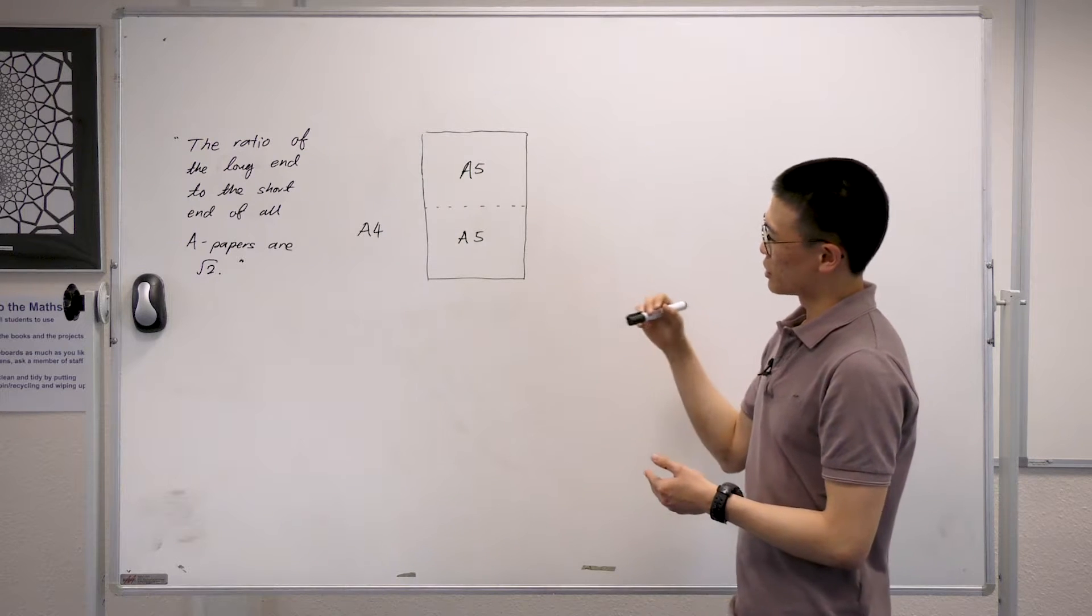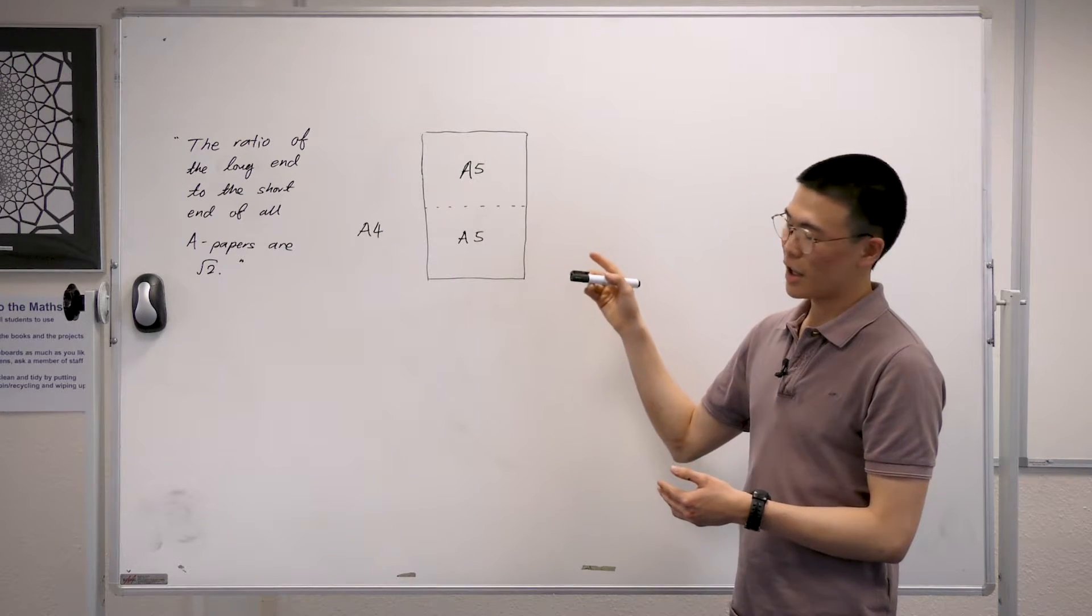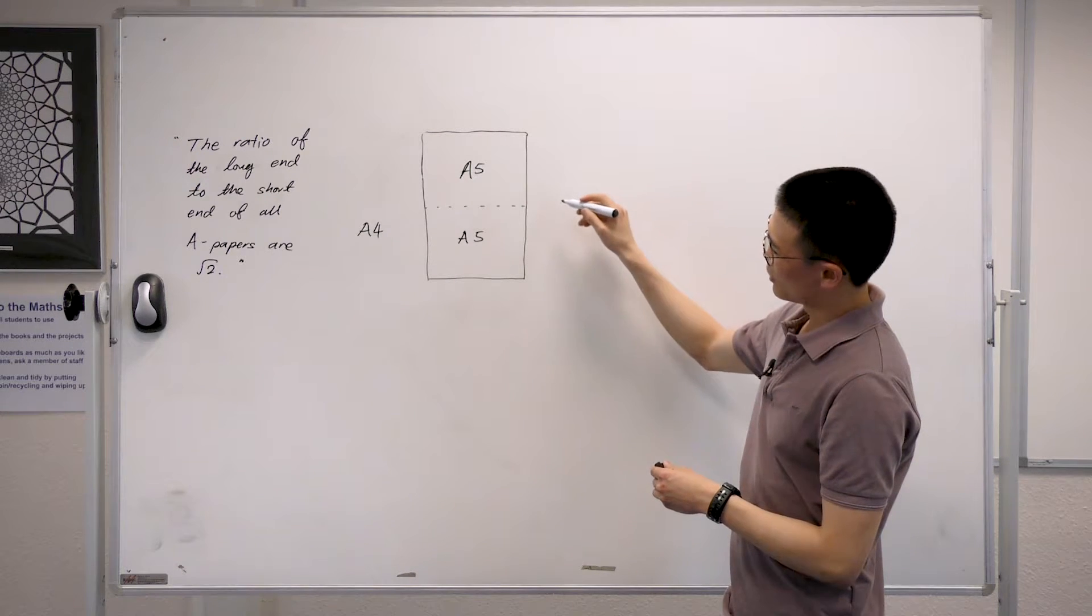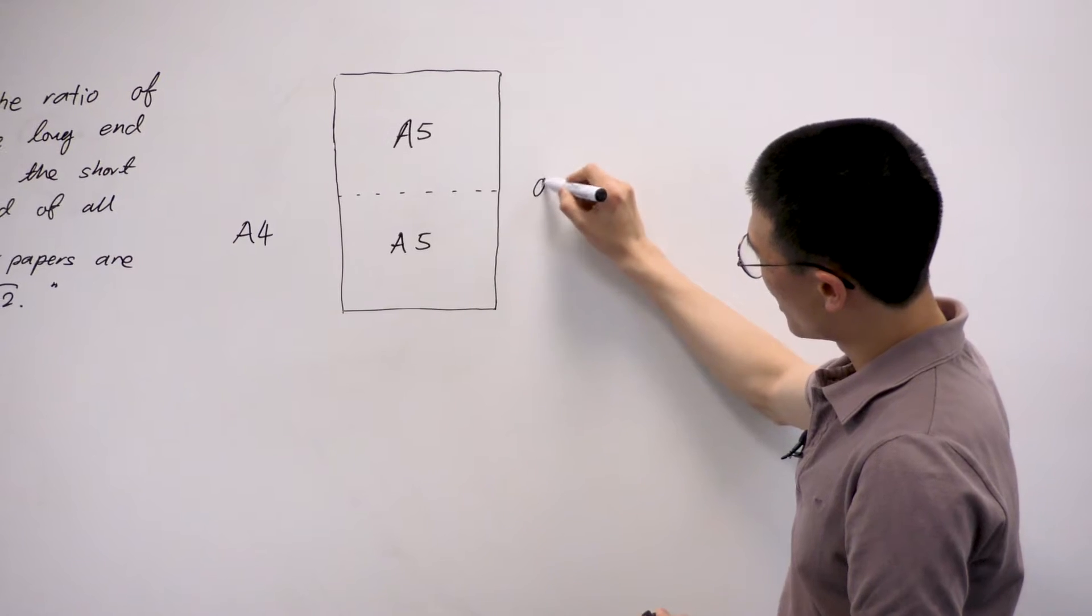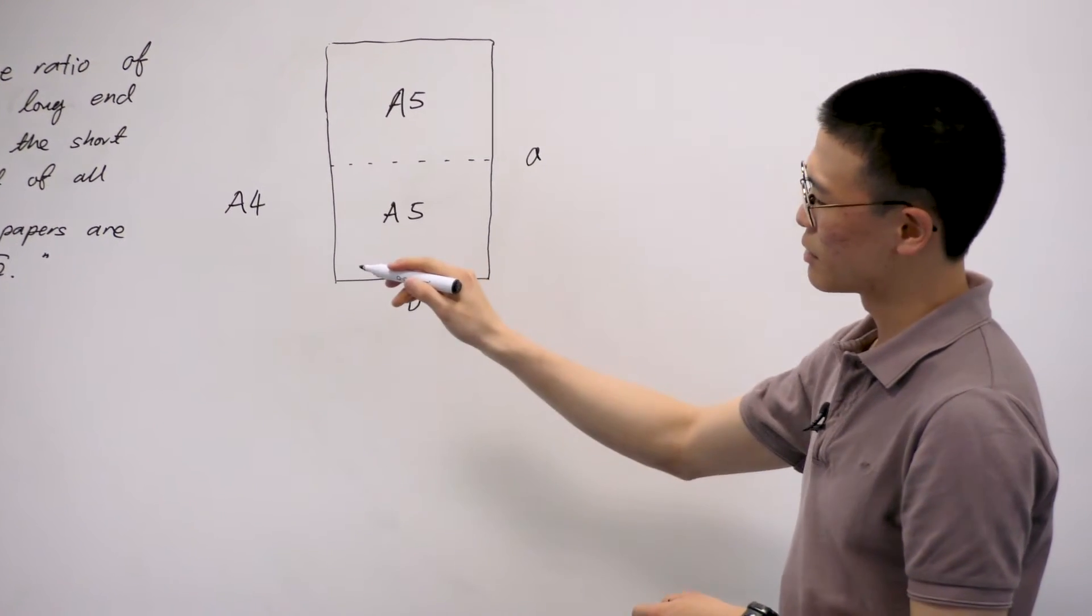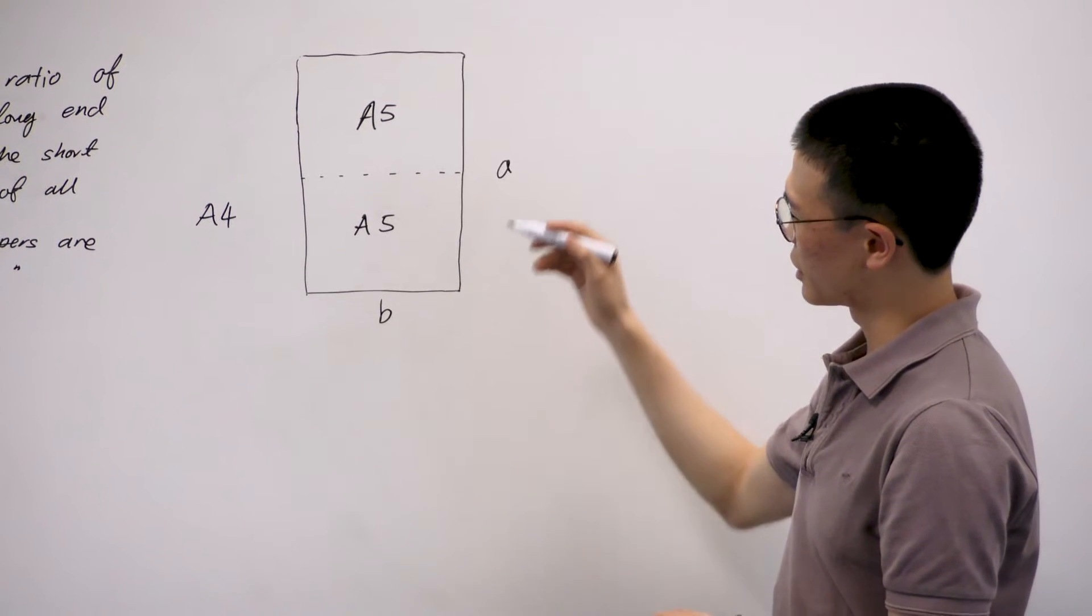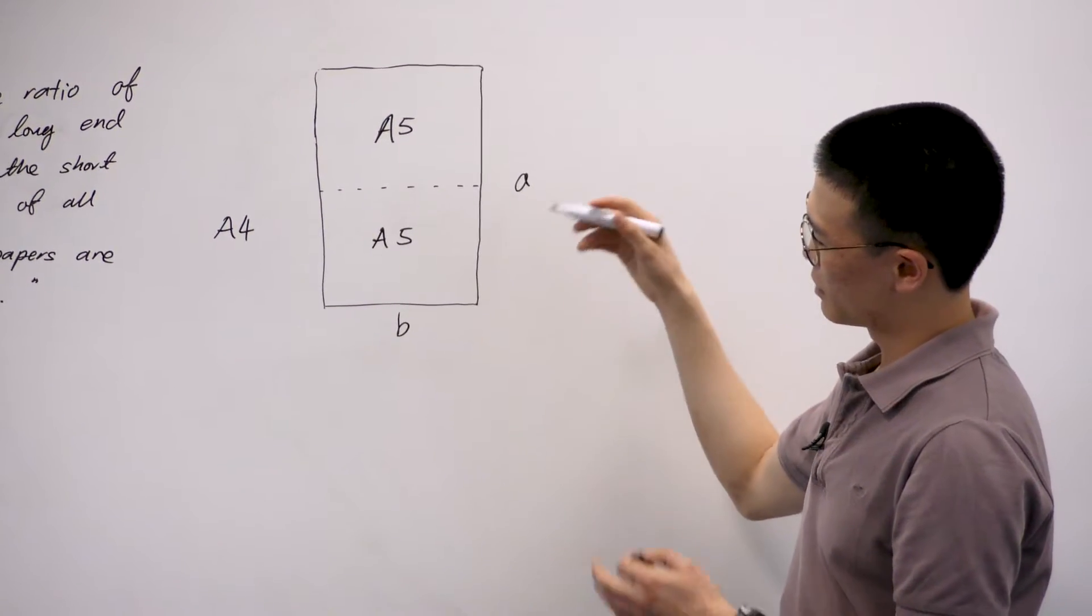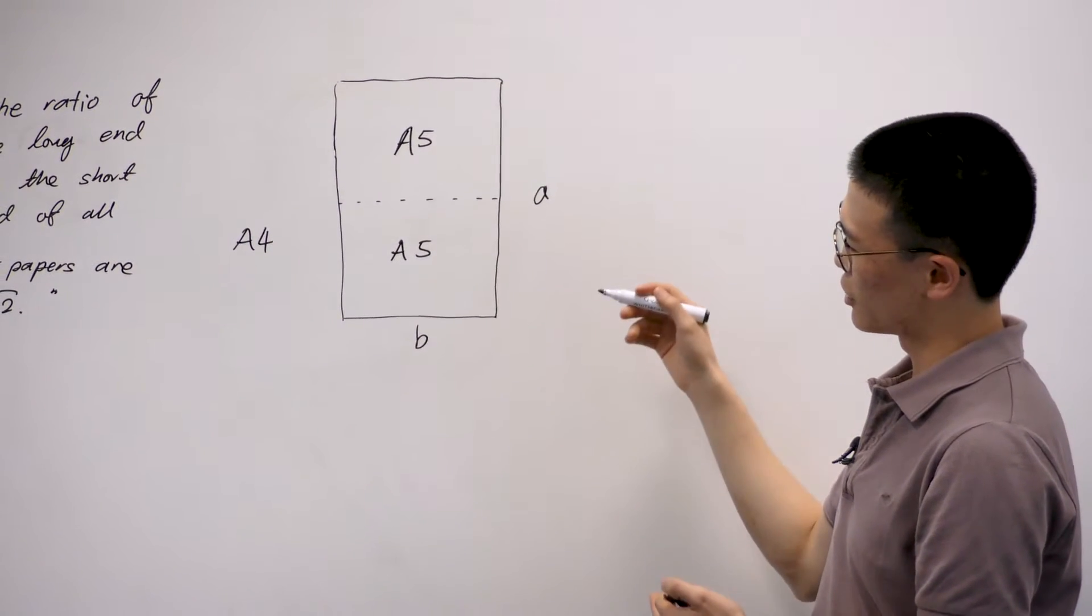So the fact that we're going to use now is that every time you fold in half, the ratio between this long end over here, which we're going to call A, to this short end over here, which we're going to call B, is root 2. And we're going to prove that by using the fact that you fold it, it's going to give you the same ratio between the long and the short end.